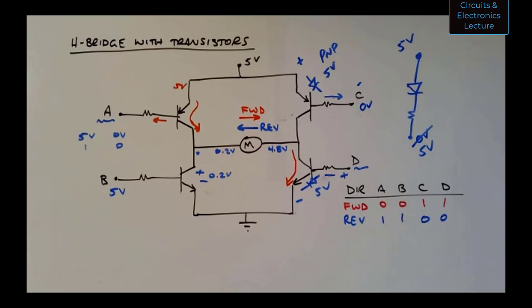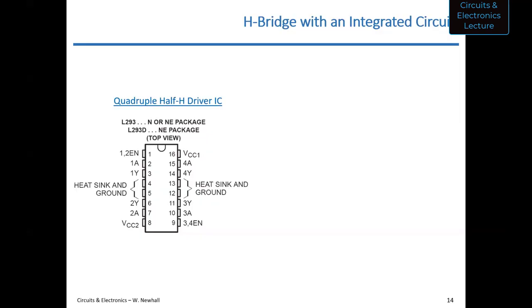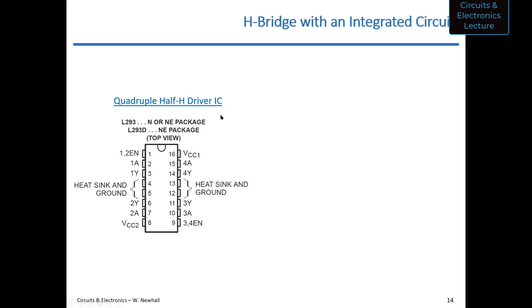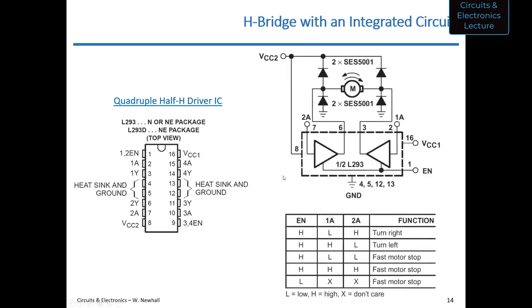One more thing about H-bridges: you can buy integrated circuits that do this instead of using discrete transistors. For example, this is called a quadruple half-H driver IC — essentially two H-bridges in one integrated circuit. Whenever you see a heat sink connection, that means the chip gets hot and needs to dissipate heat, indicating it's a higher-power chip.